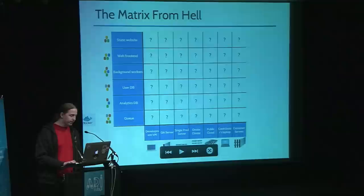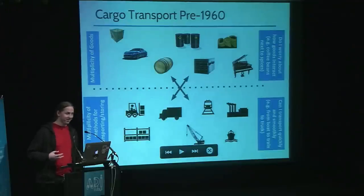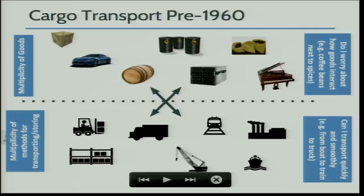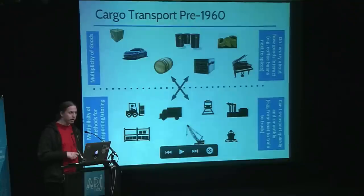We looked at cargo transport. Before the 1960s, cargo transport was quite complicated too. You had two problems: first, how do you know that the different products you transport won't interact badly with each other — for example, if you transport spices and coffee in the same boat, how do you know the coffee won't get a different color or taste?